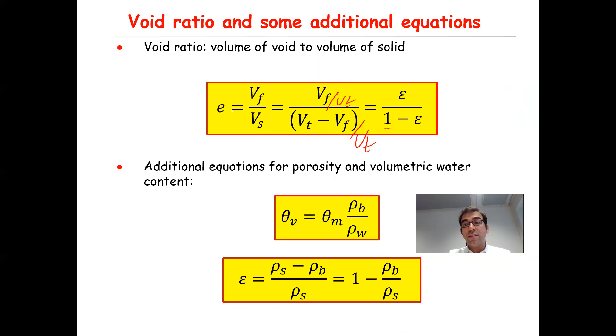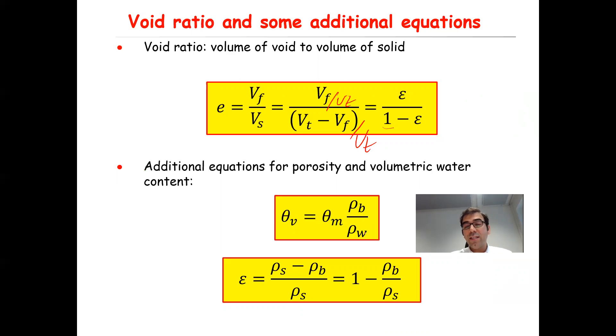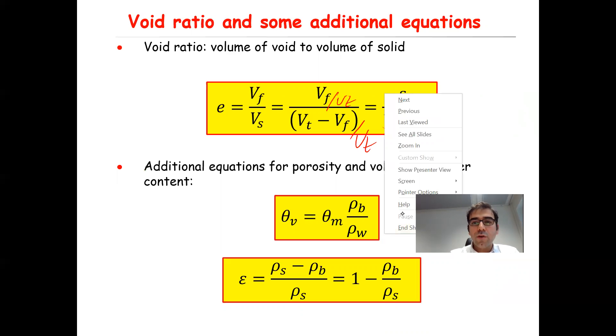Using these basic equations, you can derive additional equations. For example, you can derive that theta_v, the volumetric water content, equals gravimetric water content times rho_B divided by rho_W. So the equation is theta_v equals theta_m times rho_B divided by rho_W.